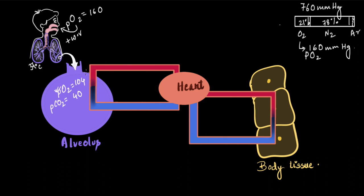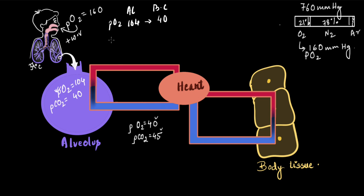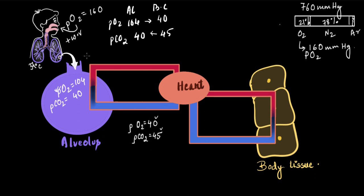For gases to move in or out of the blood, we need to know the partial pressures in the deoxygenated blood arriving from the heart. The pO2 in deoxygenated blood is 40 mmHg and pCO2 is 45 mmHg. Since pO2 in the alveolus (104) is higher than in the blood capillaries (40), oxygen moves from alveolus to blood. Since pCO2 in the blood (45) is higher than in the alveolus (40), carbon dioxide moves from blood to alveolus.